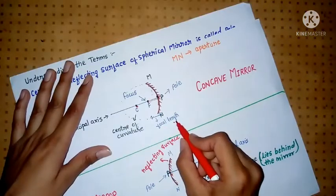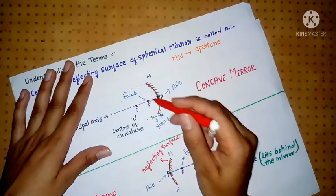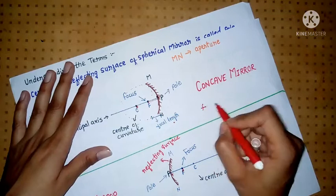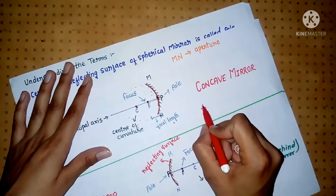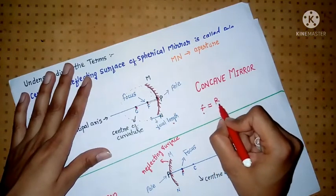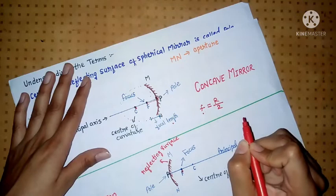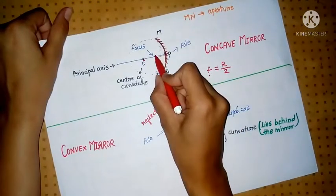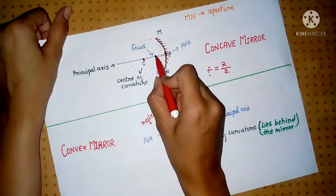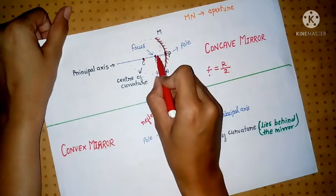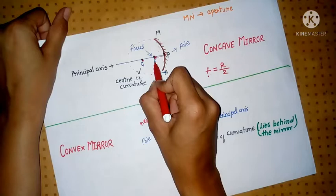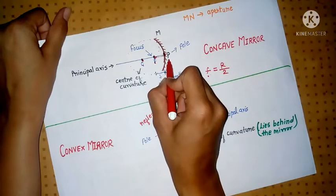The focal length is always half of the radius of curvature. Focal length is represented by small f. Focal length is half of the radius of curvature. The length from focus to pole — the distance from C to F is equal to the distance from F to P.